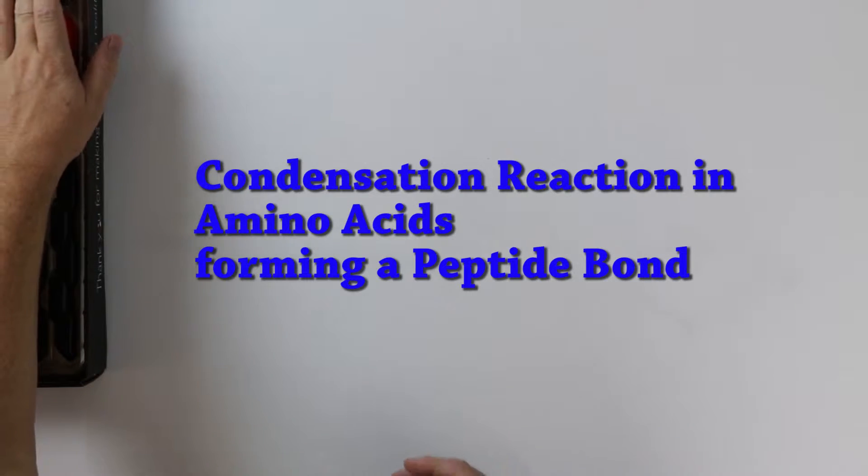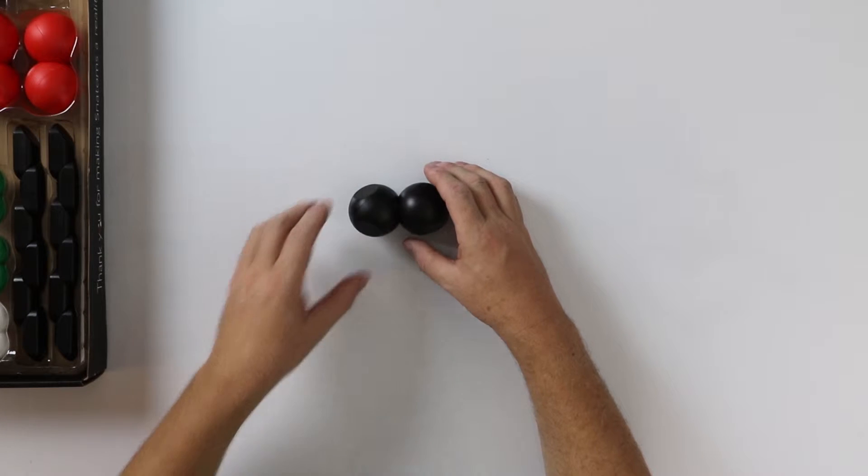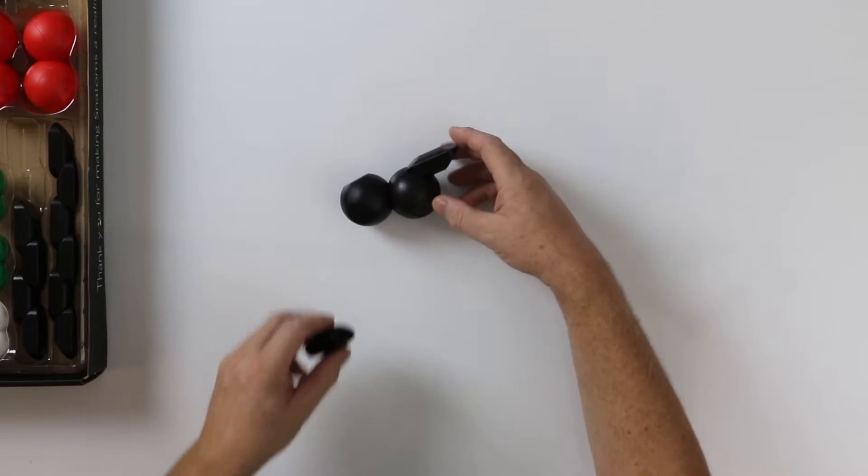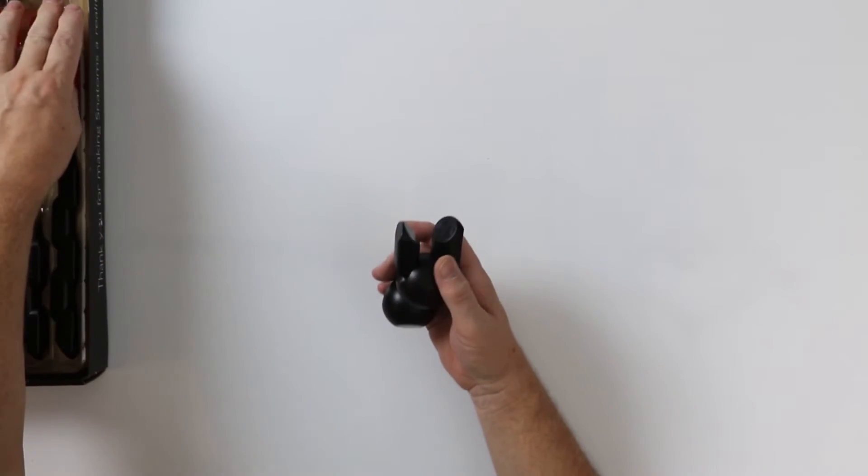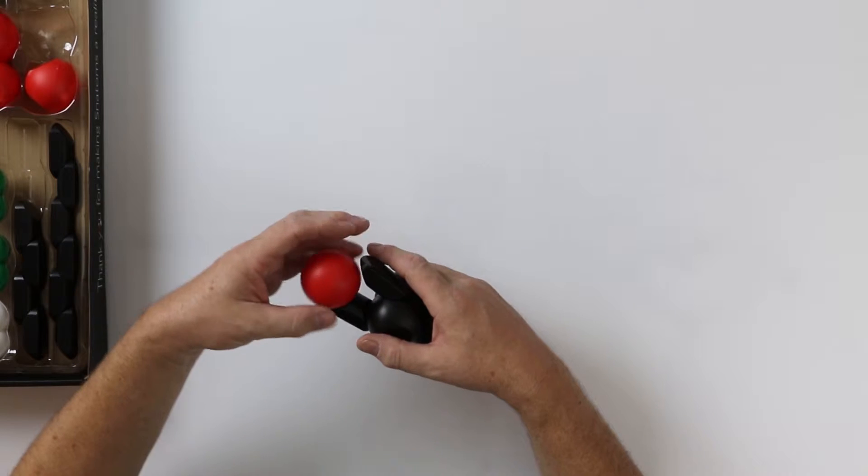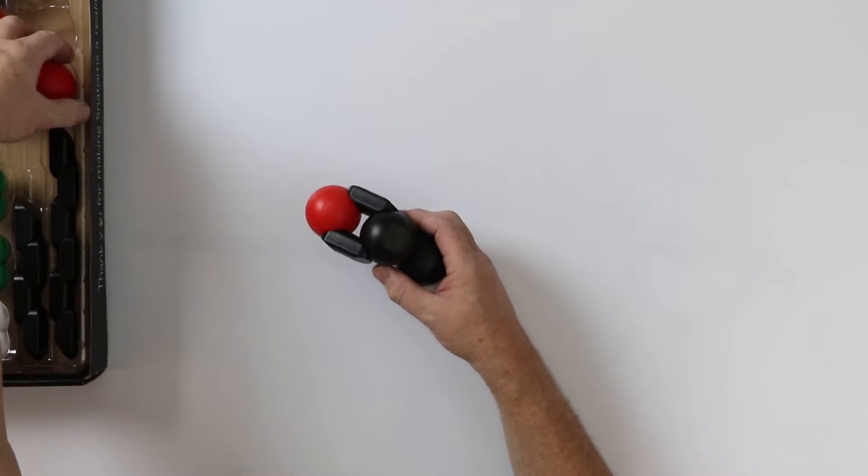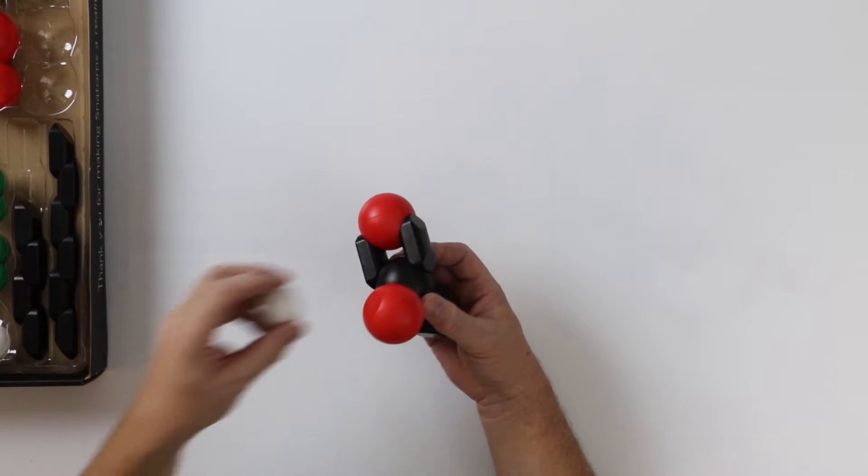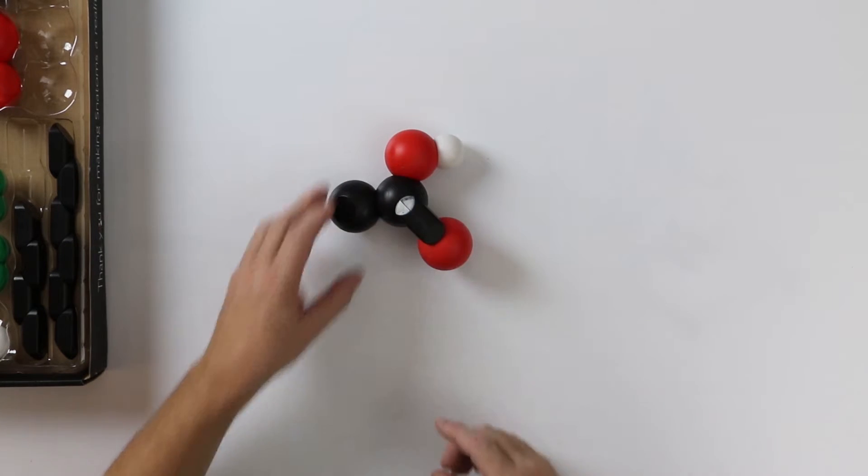Let's take a look at a simple amino acid. It contains a double bond at one end to an oxygen atom, and another oxygen with a hydrogen, forming a carboxylic acid group.